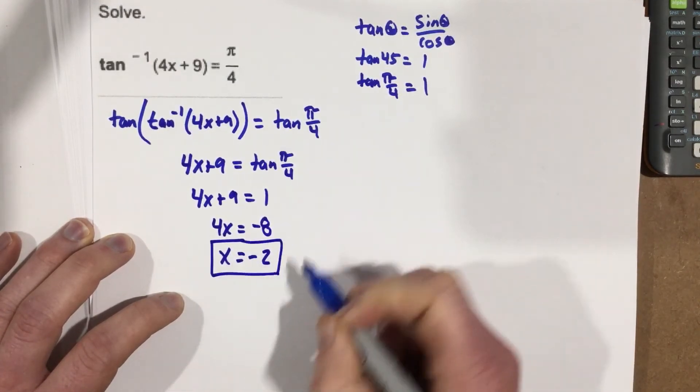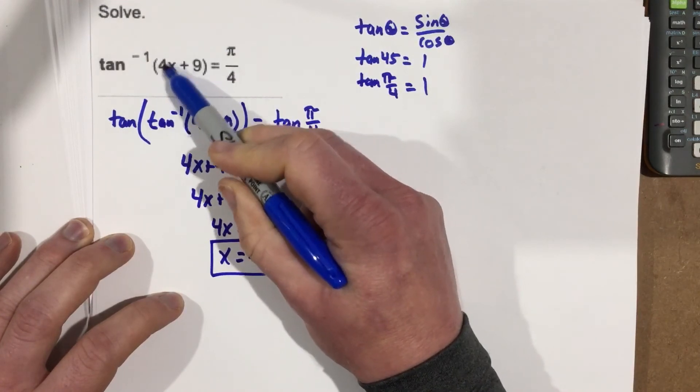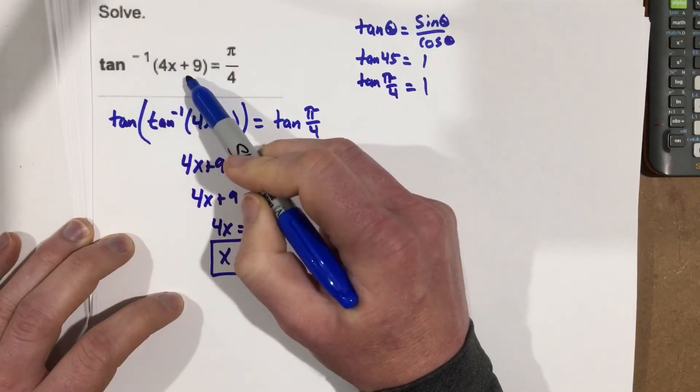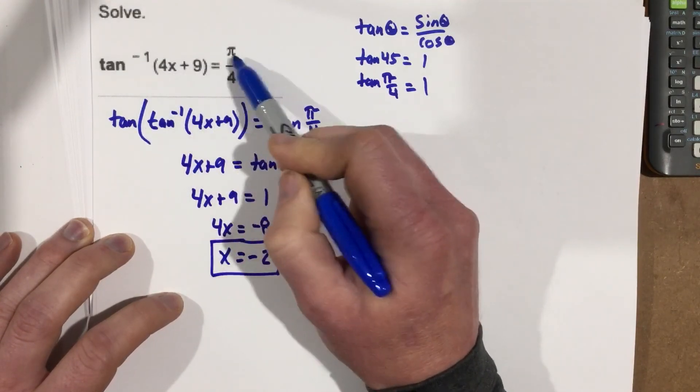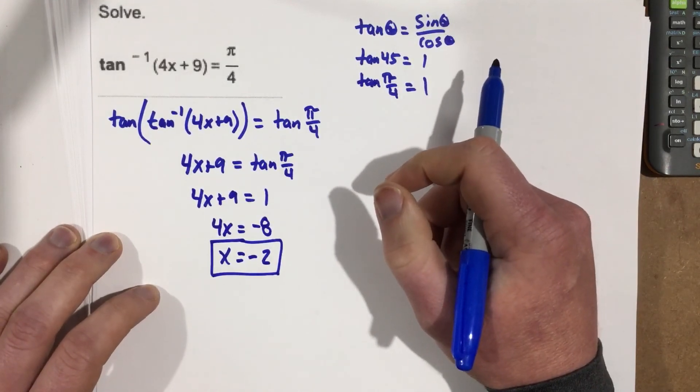So all this is telling me is, if I have an x value of negative 2, that would give me negative 8 plus 9, which would give me tangent inverse of 1, which we know the tangent inverse of 1 is pi over 4, because tan of pi over 4 is 1, and they're opposites.